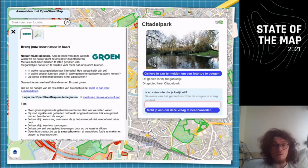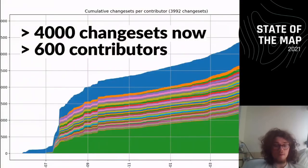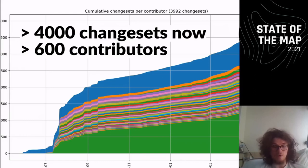It had pictures and you could add a few questions, so it was really basic. That was a little over a year ago. The first changeset, made by me purely for testing, was made on the 27th of May. From then on, once Buurtnatuur was launched, it was pretty much a success. By now we have over 4,000 changesets made by over 600 contributors — that's quite a success. The original Buurtnatuur alone had around 1,000 changesets with over 100 contributors. You can clearly see the change and the marketing of Buurtnatuur in the two big jumps on the graph.